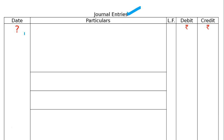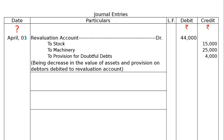Now the journal format is ready. Write the year in the journal — note down the current year as given in the question, and don't forget the rupee symbol. First journal entry on April 1: Revaluation account debited to Stock, Machinery, and Provision for Doubtful Debt — total 44,000 on the debit side. Narration: decrease in value of assets and provision on debtors debited to Revaluation account.